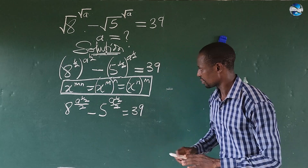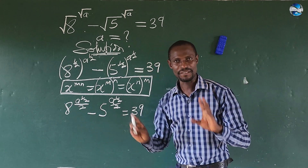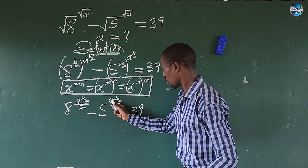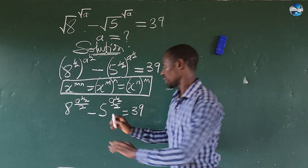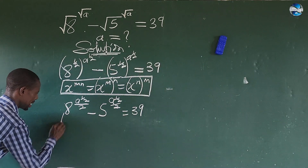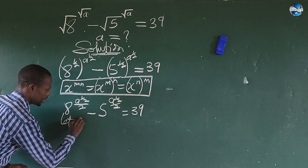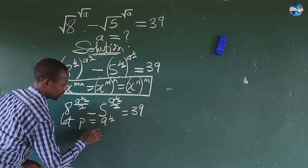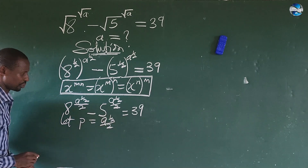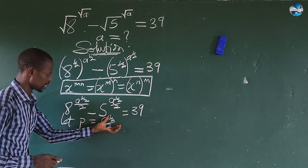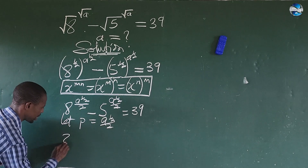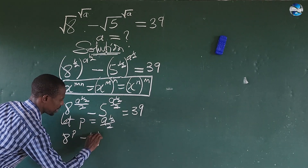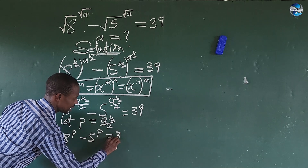Now from here, I want to bring in a variable to represent the exponents, because what we have here at the exponent is the same. So we can say let P equal to A to the power of 1 over 2, everything to the power of 1 over 2. So we're going to see this expression simplified: here we're going to have A to the power of P, then minus 5 to the power of P, equal to 39.